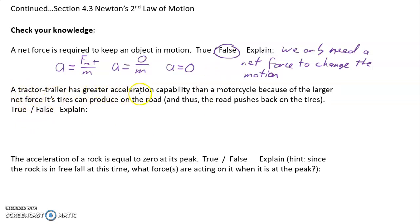A tractor trailer has greater acceleration capability than a motorcycle because of the larger net force that's acting on the tractor trailer. That's also false.